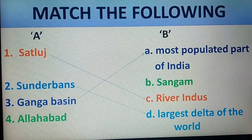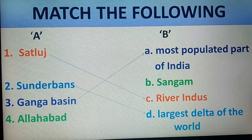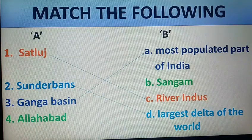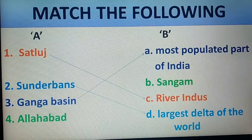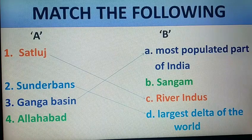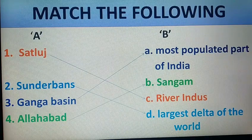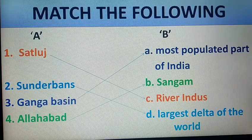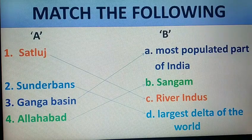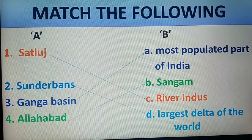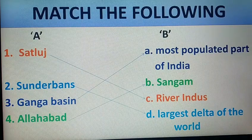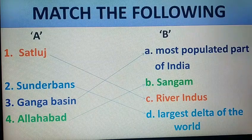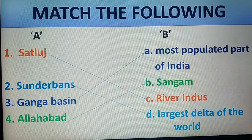The fourth entry is Allahabad. The meeting point of rivers Ganga and Yamuna is in Allahabad. The meeting point of river Ganga and Yamuna is called the Sangam, and these rivers join at Allahabad. That means Sangam is in Allahabad.